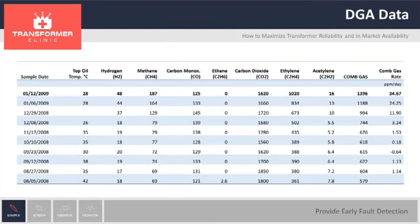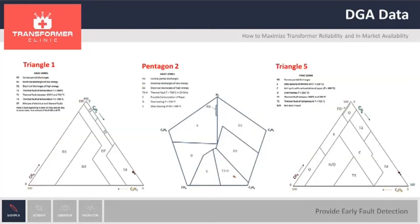When looking at the DGA data, you can see the evolution. Ethylene, when we started monitoring, was at 361 parts per million. By the end of monitoring, we were at 1,020 parts per million. The gassing rate at the beginning was 1.14 parts per million per day. The gassing rate at the end was 34.67 parts per million per day. So it is clear that the fault was getting worse and evolving. Looking at the DGA data, the diagnoses were: with Duval Triangle 1, we have a high-temperature fault; with Duval Triangle 5, we have a high-temperature fault; and with Pentagon 2, we have a high-temperature fault in the oil — the same diagnosis from all of them.